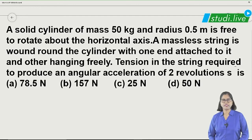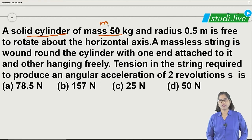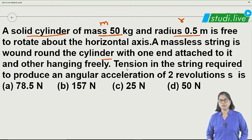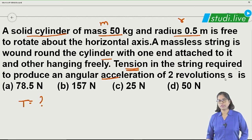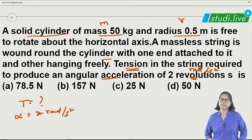The next question is about a solid cylinder — remember that a cross-section of a solid cylinder is disc-shaped. Mass is given, radius is 0.5 meters. A string is wound around it, so there will be tension in the string. Angular acceleration alpha is given as 2 radians per second squared. We need to find the tension in the string.